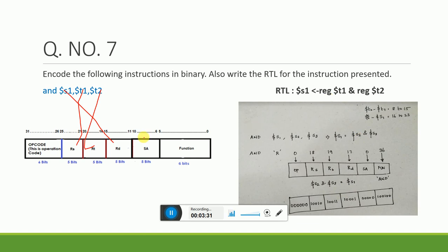Now t1 corresponds to 9, so in rs I need to put 9: 10001 is the value, and since it is 5 bits I will put one more zero. rt is t2, which is 10, so 01010. rd is s1, s1 is always 17, so I need to make it 100001.